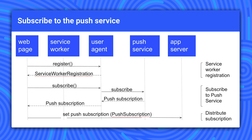This is the process of subscribing to the push service. The request goes to the user agent, which returns the service worker registration object. Use the service worker registration object to access the Push Manager API, and from that request to subscribe to the push service. This request is passed on to the push service, which returns the subscription object — including the endpoint URL and the public key. Save the subscription object data to your server and send push messages from your server to the endpoint URL encrypted with the public key.